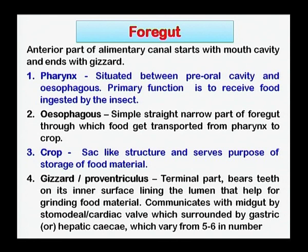Pharynx and esophagus are straight narrow parts of the foregut, whereas the crop is a sac-like structure that serves the purpose of storage of food material. The gizzard, also called proventriculus, is the terminal part and bears teeth on the inner surface lining of the lumen, and this part helps in grinding the food material.